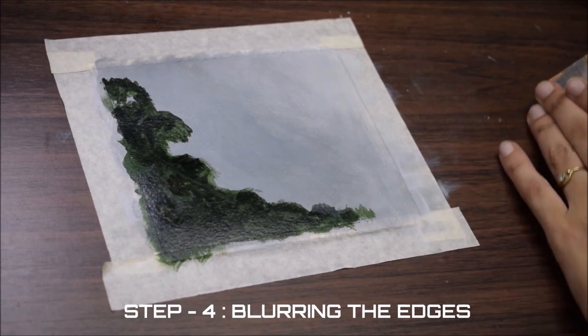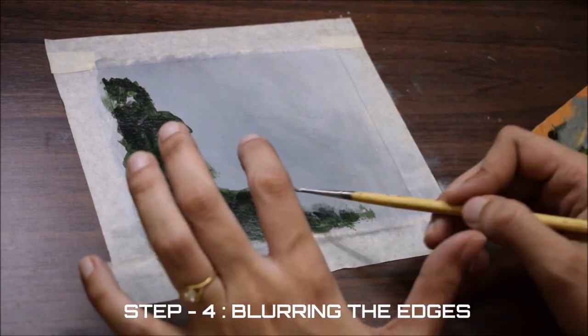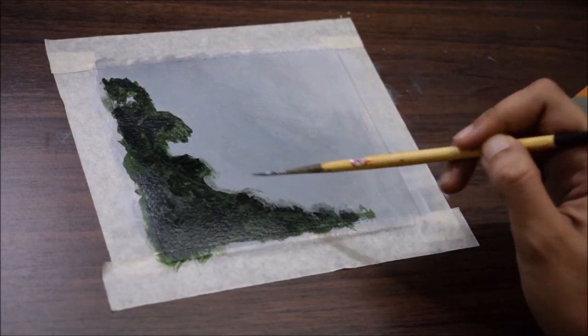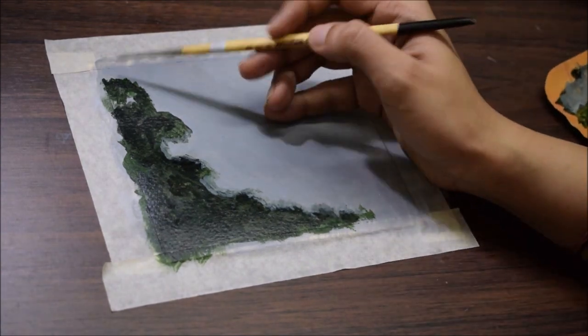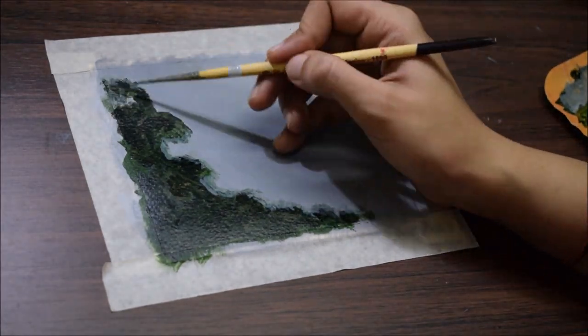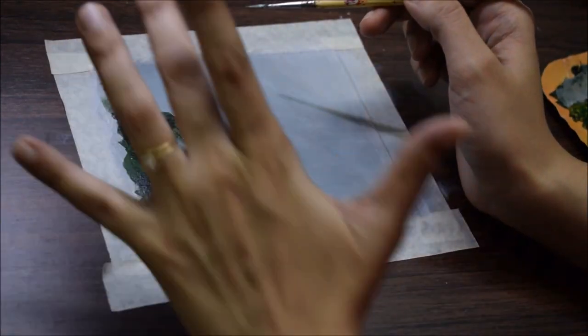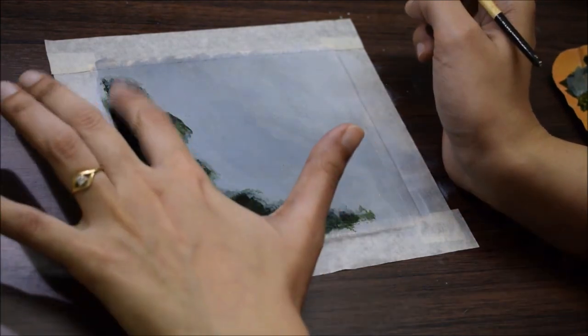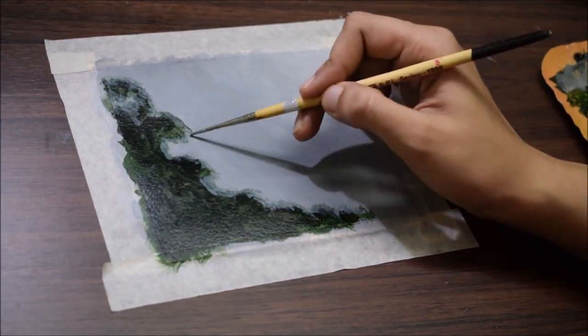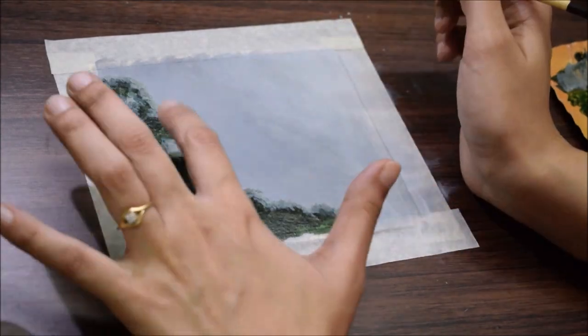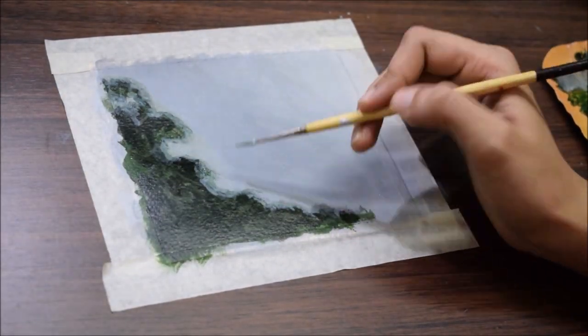Now comes step 4. Here I am blending sharp edges of the tree with very diluted grey colour. Dilute the colour into the ratio of 1 is to 3, that is one part of colour diluted with 3 parts of water. Remember that blurred objects don't have sharp edges, so we have to merge the edges into background very nicely.